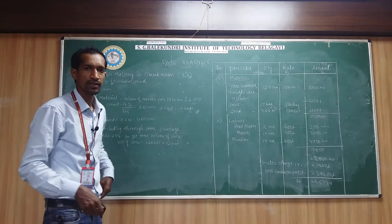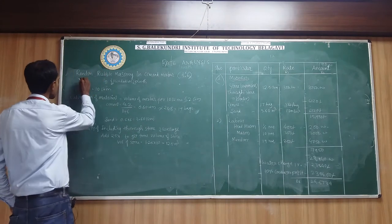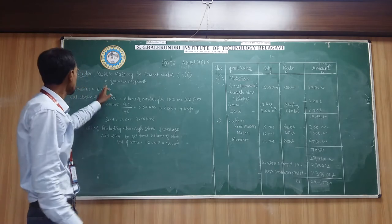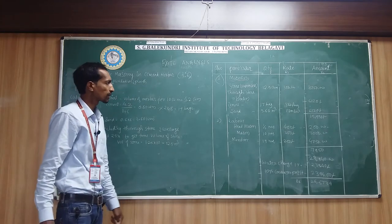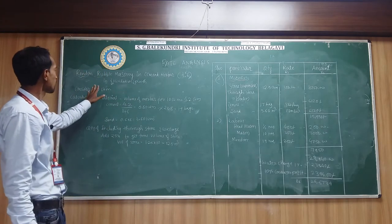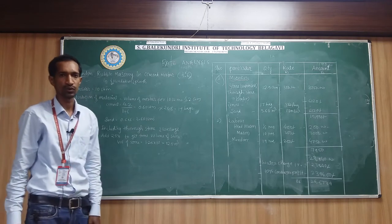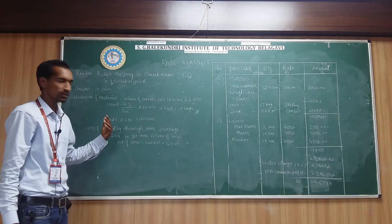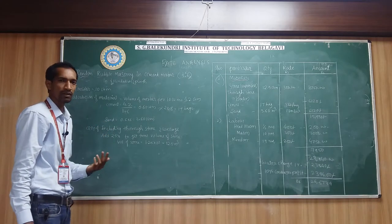In this class you are going to learn the rate analysis of random rubble masonry in cement mortar 1 is to 6 in foundation and plinth. In this rubble masonry we require the stones and the mortars for construction. Mortar means quantity of sand and cement will come.